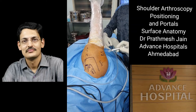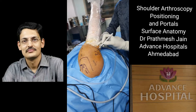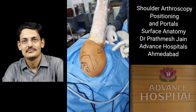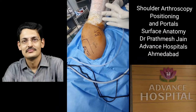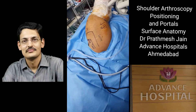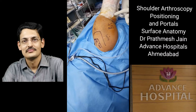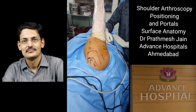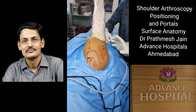There are two more portals on the posterior aspect of the shoulder. The low posterior lateral portal is very useful for approaching the axillary pouch — for removing loose bodies, performing posterior capsule release, inserting inferior anchors for labral repair, and passing sutures through the labrum. All of these can be done through the low posterior lateral portal.